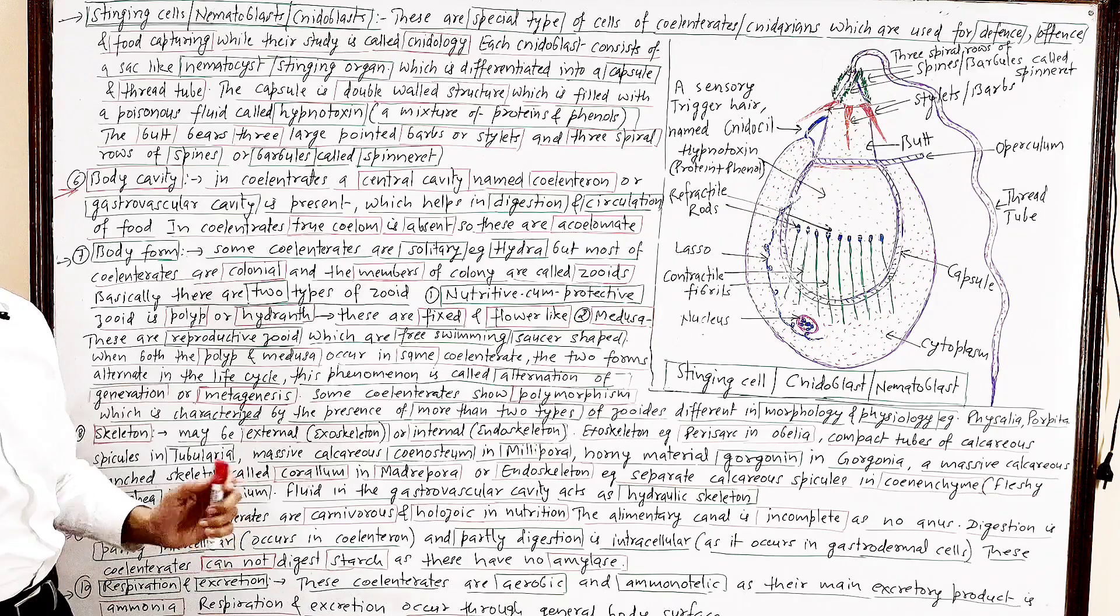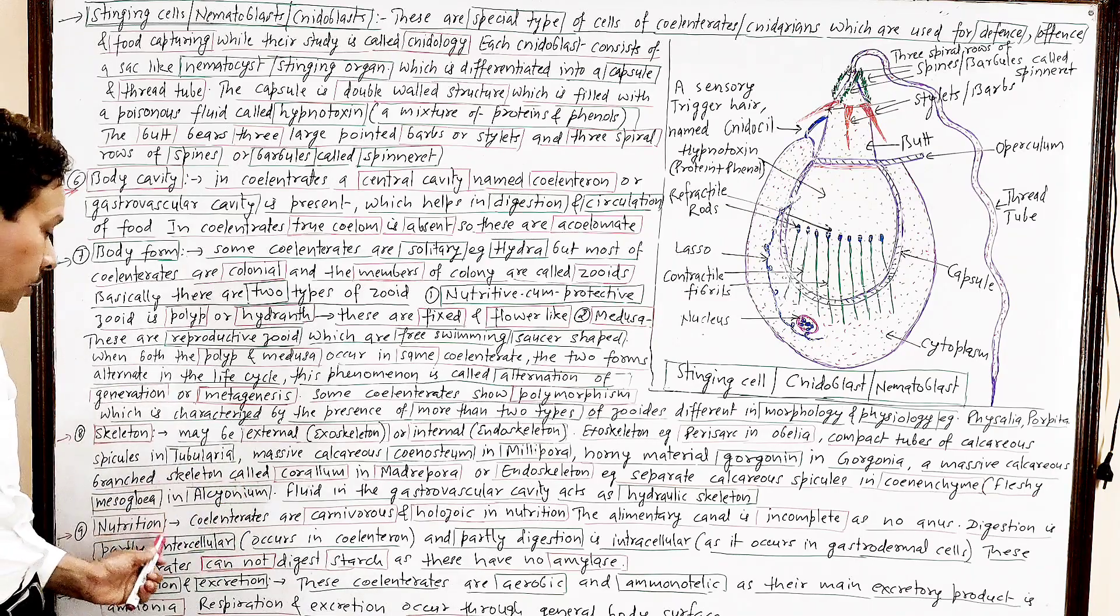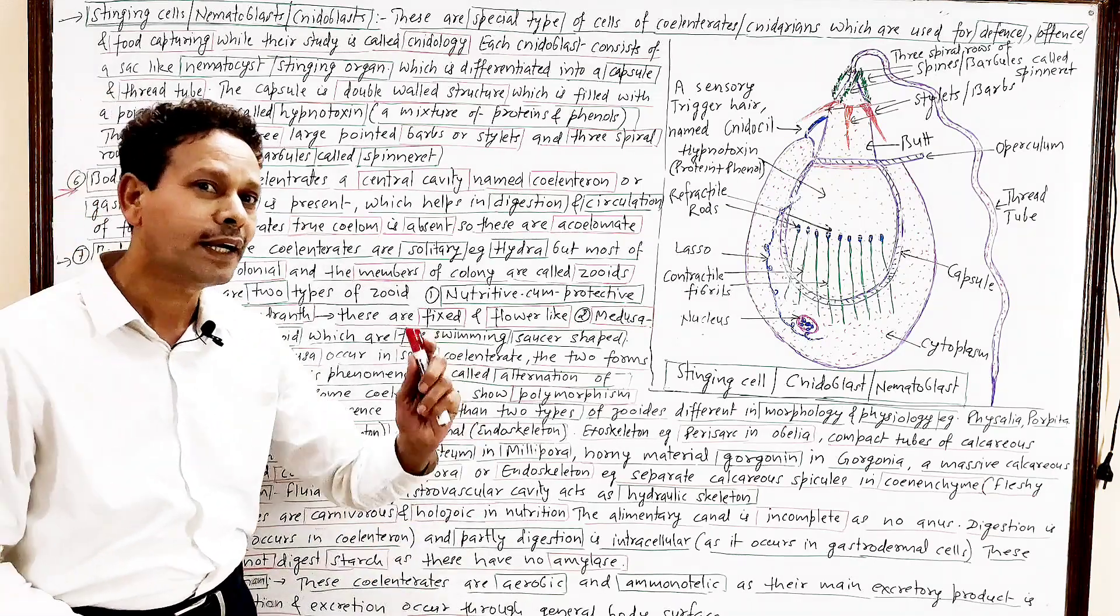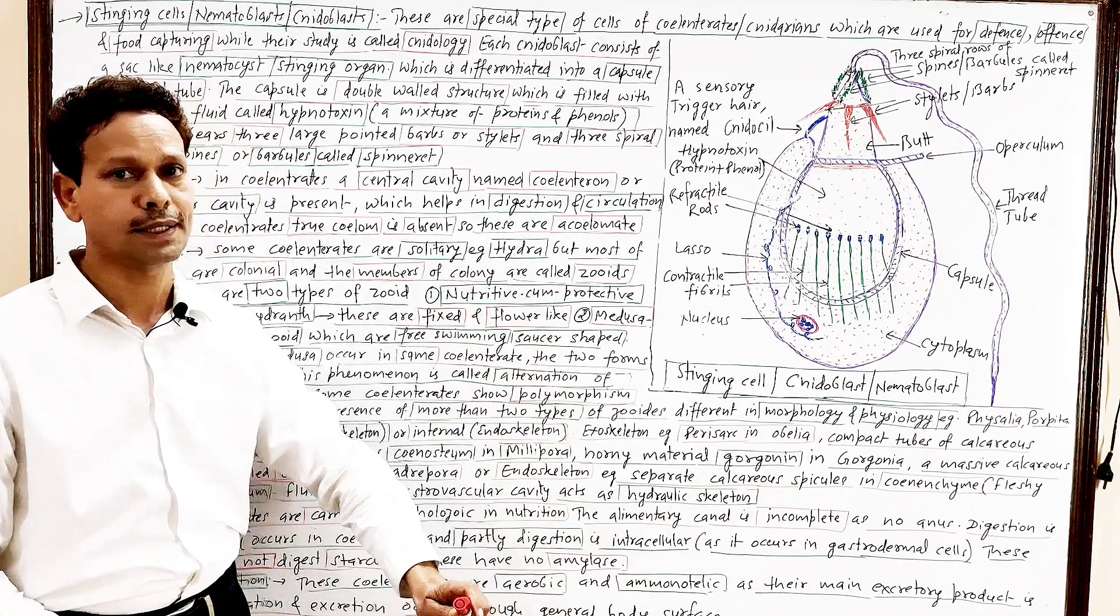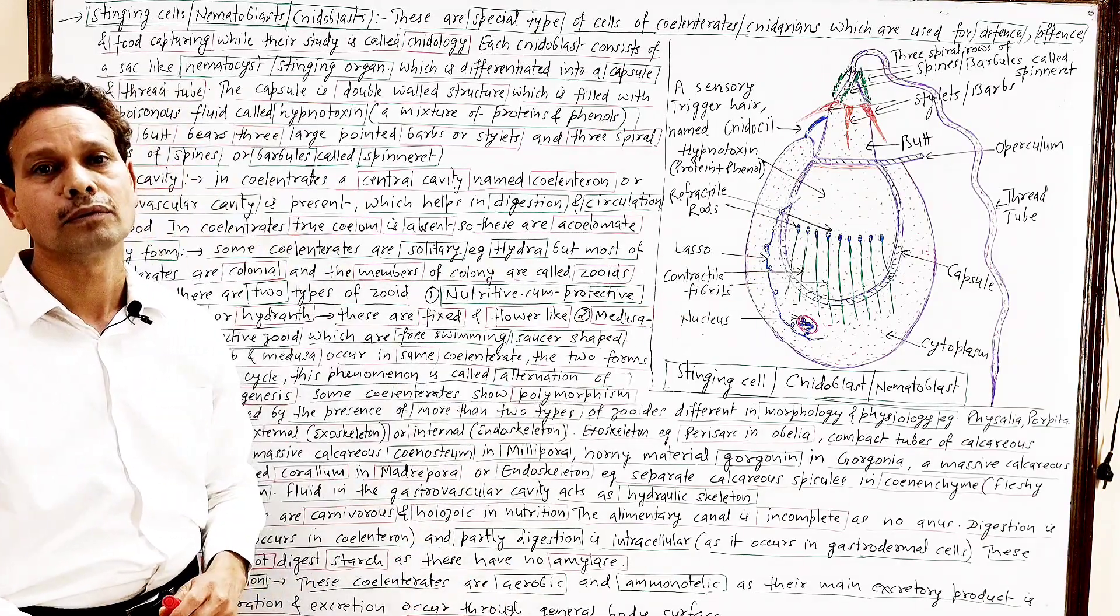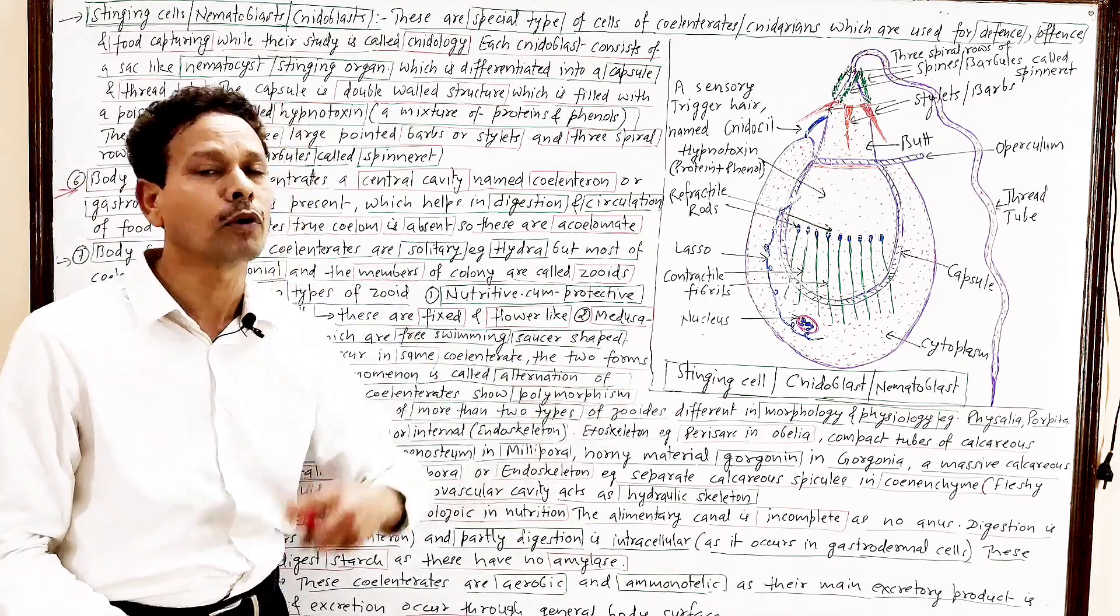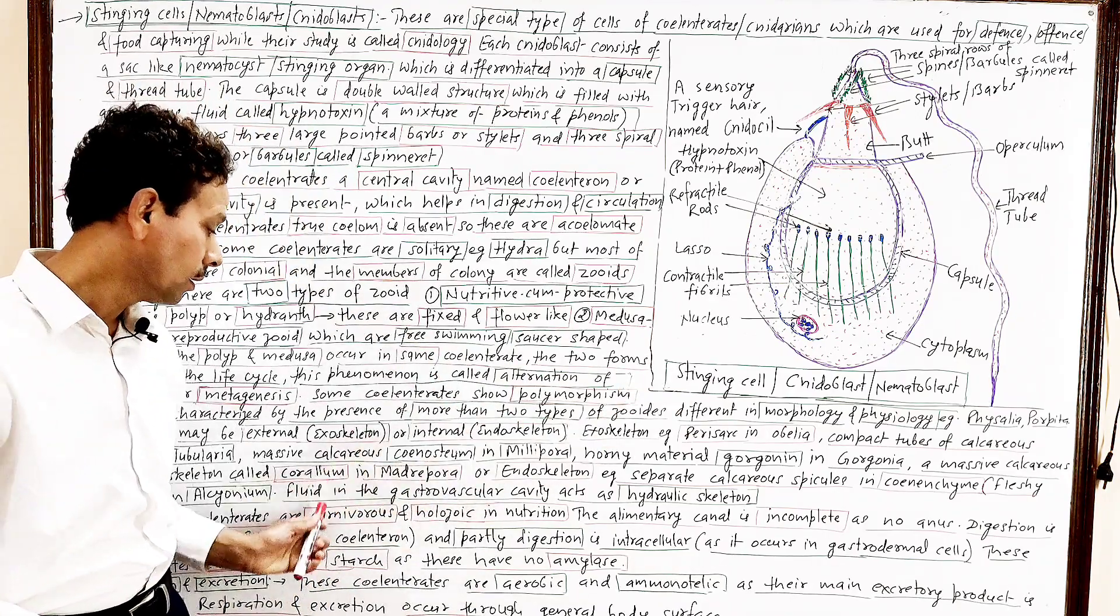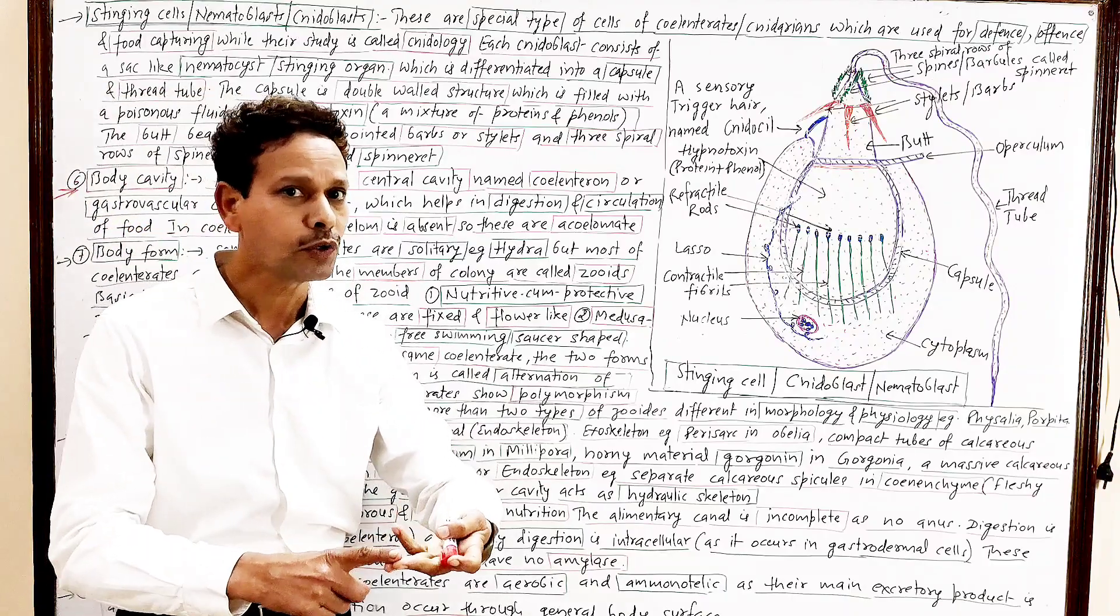Nutrition. Another important point. That is nutrition. The coelenterates are carnivores. And all are holozoic mode of nutrition, holozoic, complete animal-like mode of nutrition. And these are carnivores.